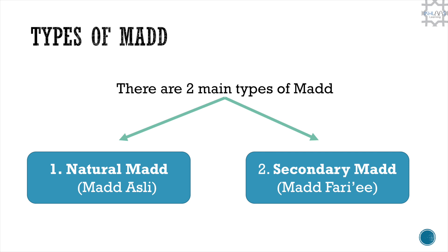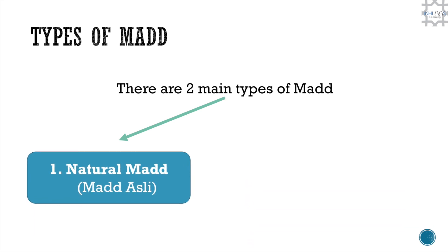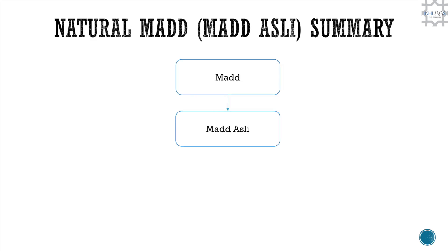As we mentioned in the last video, there are two main types of mad. The natural mad, which is known as mad asli, and the secondary mad, which is known as mad fara'i. In the next coming lessons, we will be focusing on different branches of mad asli. Mad asli consists of five branches.